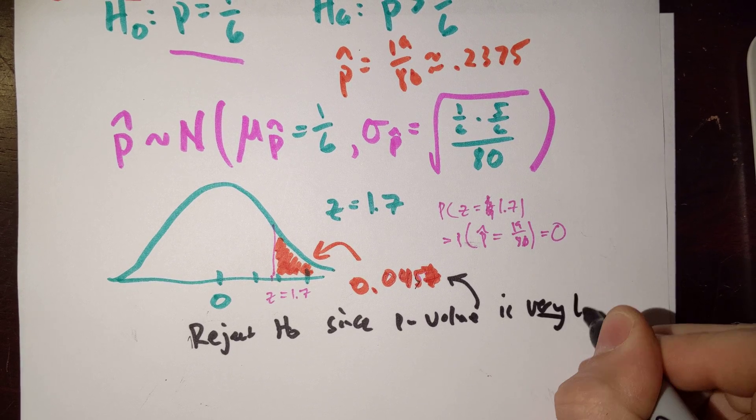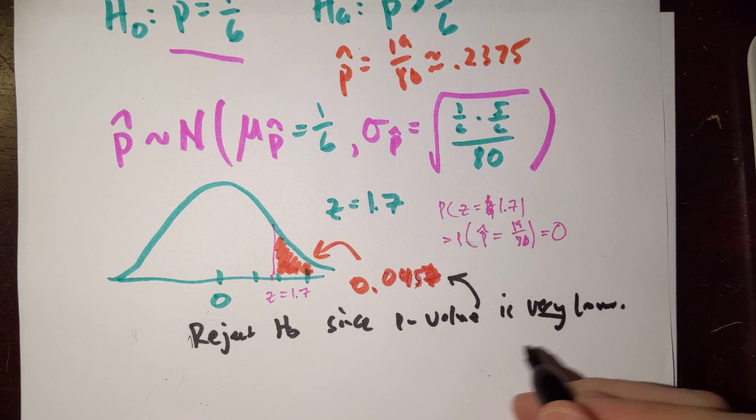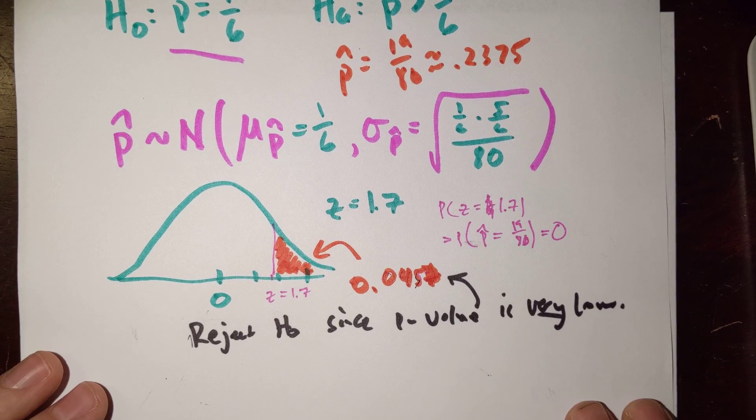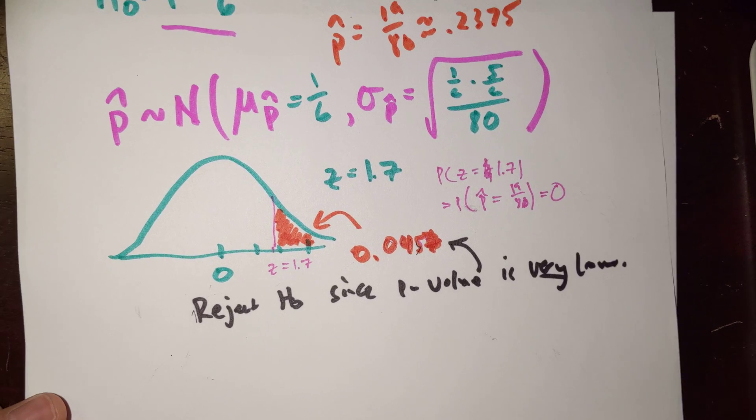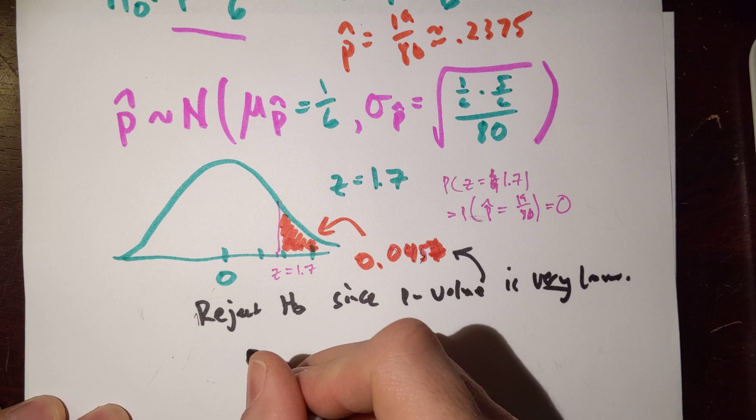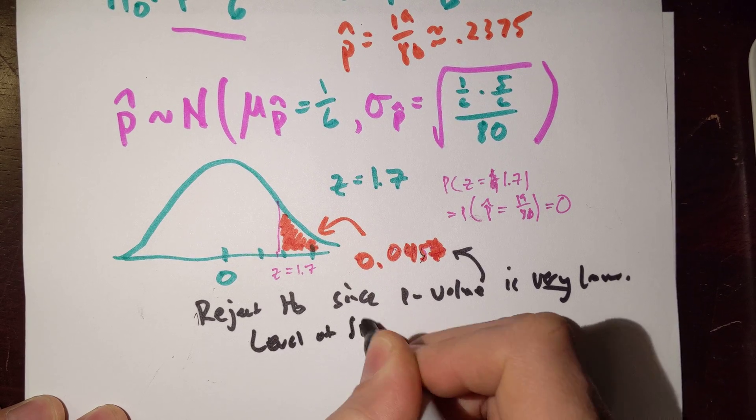Now, of course, very low sounds very subjective. What counts as a low enough? Well, in this case, we might say since it's lower than 5%. And just to let you know, the special name we have for that boundary is something that's called the level of significance.